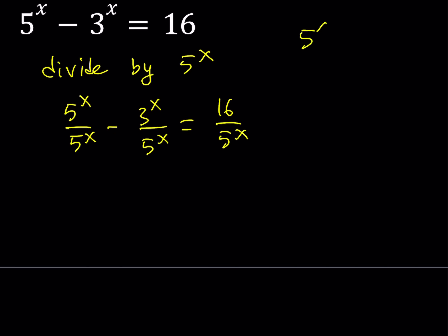Obviously 5 to the power x is never 0, it's always positive, so this is okay to do. Now 5 to the power x divided by 5 to the power x is 1. And this expression, because they have the same exponent, can be written as 3 over 5 to the power x. And the right hand side is 16 divided by 5 to the power x.